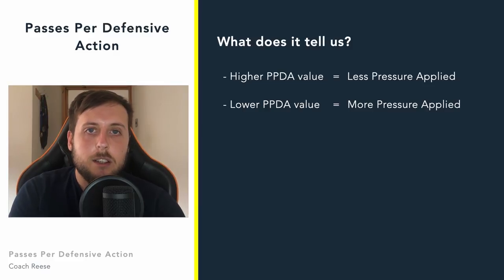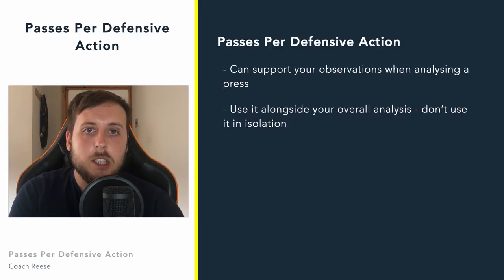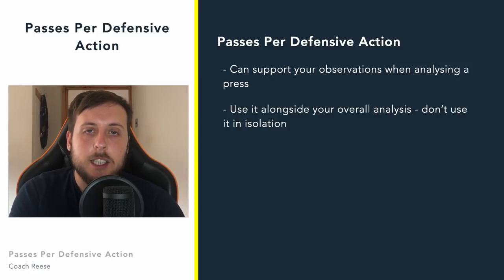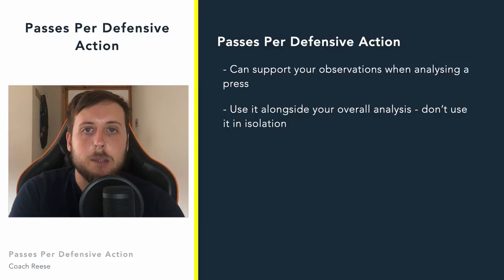So when you're analysing how a team press, passes per defensive action is a really good stat to back up the observations that you're making, and it can really help the detail that you get from your analysis within that press. Try not to use it in isolation — try to use it with all the other information, data, and your own observations that you're getting around how a team press.